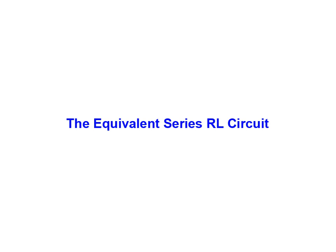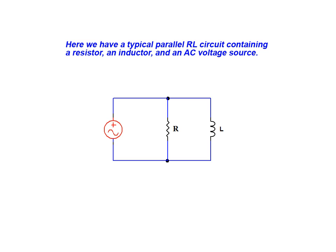The purpose of this animation is to demonstrate how a parallel RL circuit can be converted into its series equivalent. Here we have a typical parallel RL circuit containing a resistor, an inductor, and an AC voltage source.